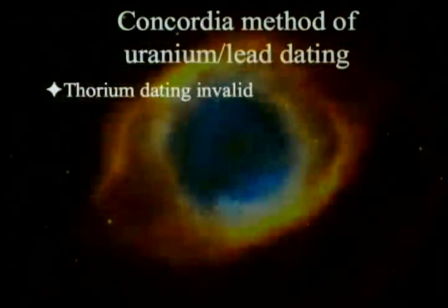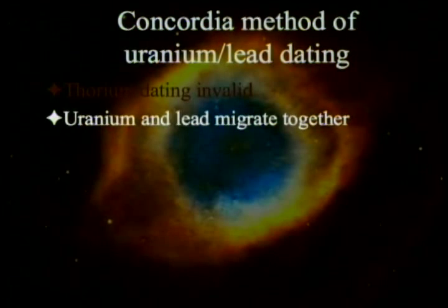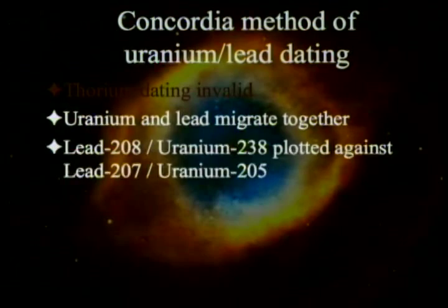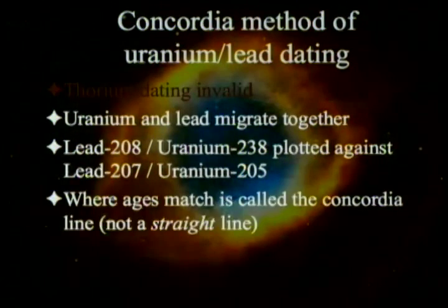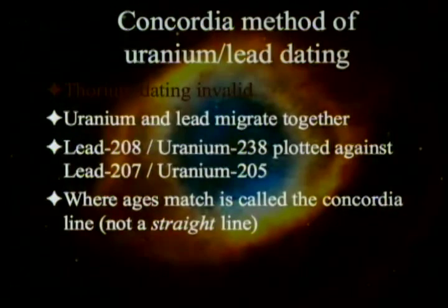So what you do is work with the Concordia method of uranium-lead dating. Thorium dating is not considered valid in this case. With the Concordia method, you assume that there has been change in the sample but it happened at a particular time, and the uranium and the lead migrated together. Lead-206 divided by uranium-238 is plotted against lead-207 divided by uranium-235. Where the ages would match perfectly is called the Concordia line — it's actually a curve, but that's what it's called.